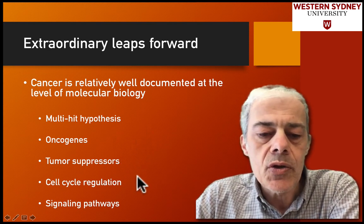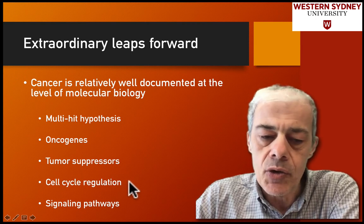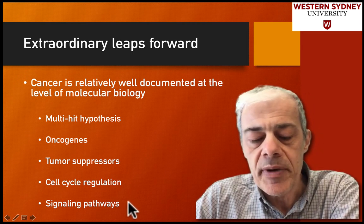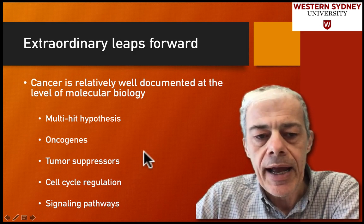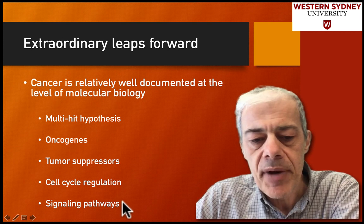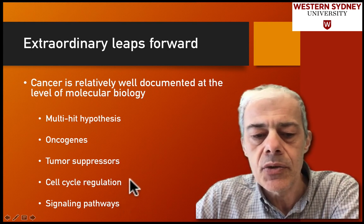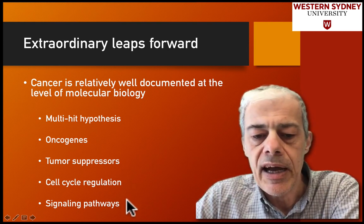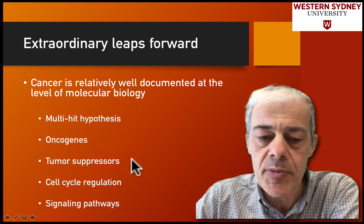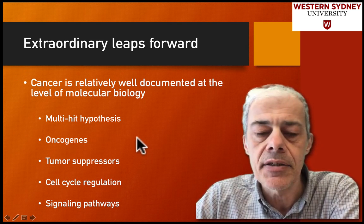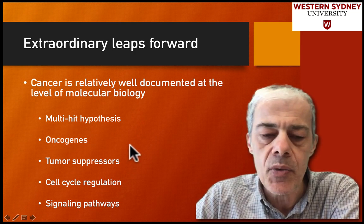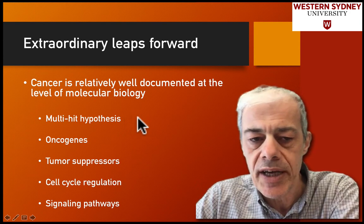We've also talked about cell cycle regulation and signaling pathways. Together, signaling pathways feed into controlling cell growth, and within these pathways we have oncogenes and tumor suppressor proteins. In cancers, multiple components of these signaling pathways are knocked out over time.